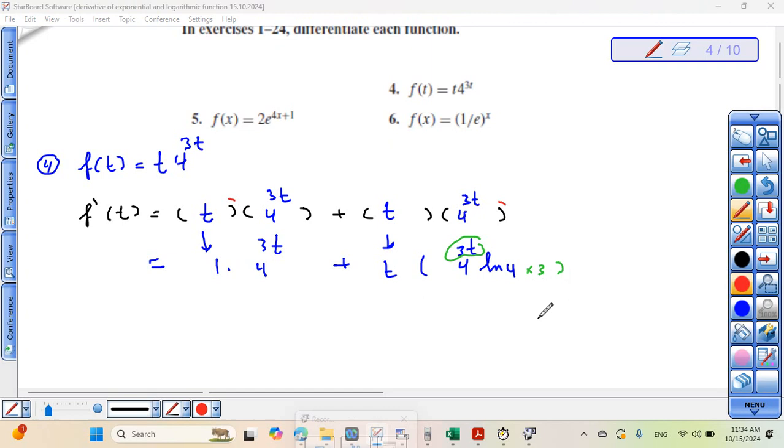The final answer equals four to power three t plus three t times four to power three t ln four. Why three t? Because three here times t. Times four to power three t ln four. This is the final answer for question four.